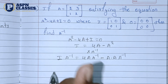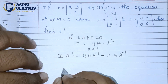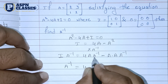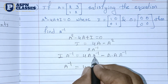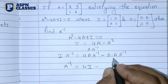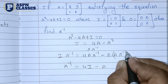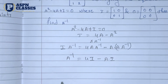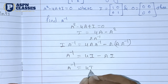Multiplying through by A inverse: A inverse times A squared minus 4A equals 0. Since A inverse times A equals I, we get: A minus 4I equals 0 times A inverse. Rearranging, A inverse equals 4I minus A.